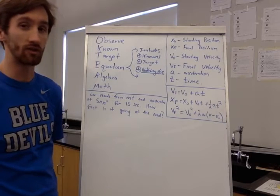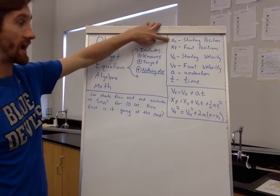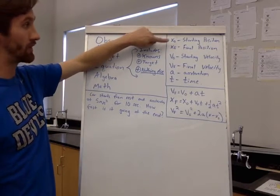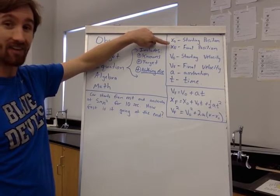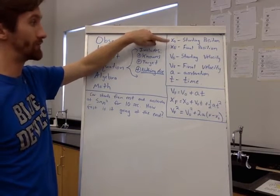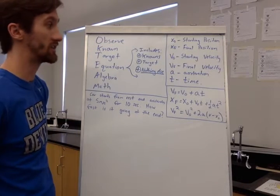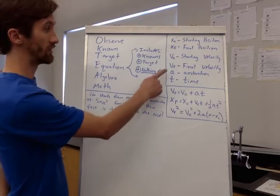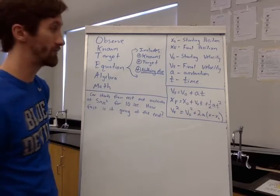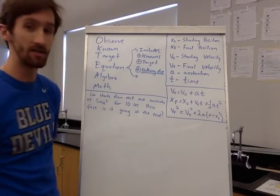Before we do the first example, we need to talk about the variables. X₀ is our starting position — where we are at the beginning of the problem. Xf is our final position — where we are at the end. V₀ is our starting velocity. Vf is our velocity at the end of the problem. A is acceleration, and T is time.